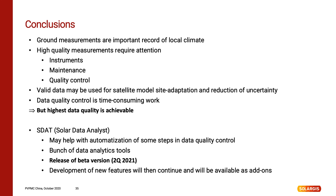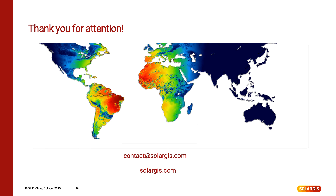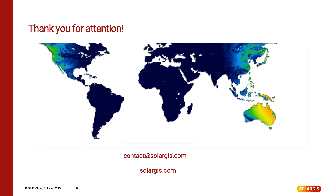Ground measurements are an important record of local microclimatic conditions. To have the most benefit from them, we need to perform high-quality measurements, and these require paying high attention to instruments, maintenance procedures, and quality controls of measured data. If everything is done perfectly, high quality of data is achievable. To support this, we are working on the SDAT software package, which will help with automatization or semi-automatization of steps in data quality control. This can be expected for testing in the first half of next year. Then development will continue and new features will be implemented as plugins. If you have any questions, or you want us to send you this presentation, feel free to write us at contact@solargis.com.